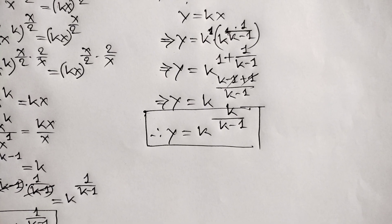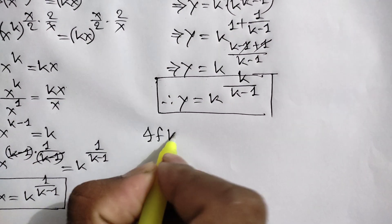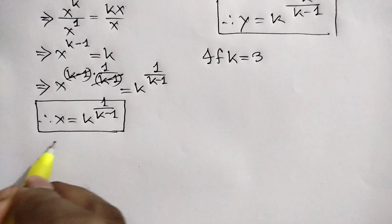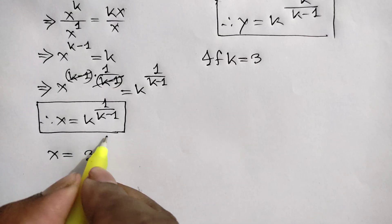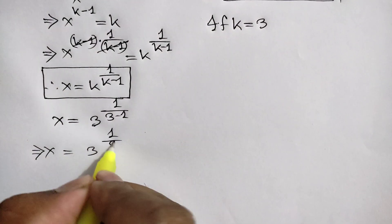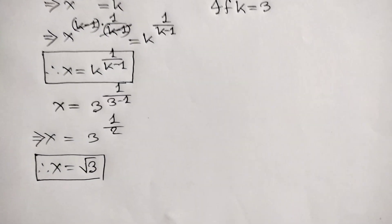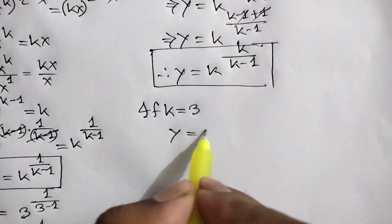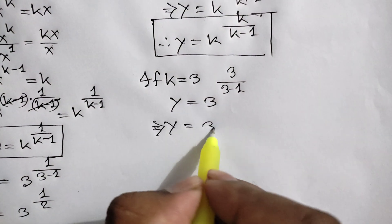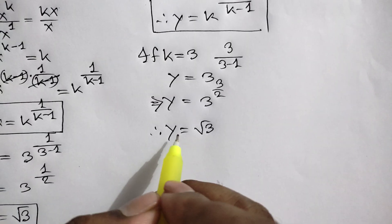Now let's find a numerical value of x and y. Let k be equal to 3. Then x is equal to 3 to the power 1 over 3 minus 1, which is 3 to the power 1 over 2. So the value of x is equal to square root of 3. And y is equal to 3 to the power 3 over 3 minus 1, which is 3 to the power 3 over 2. So y is equal to square root of 3 cubed.